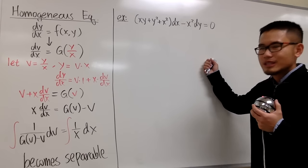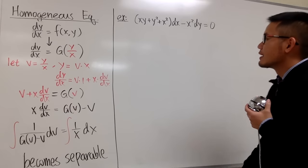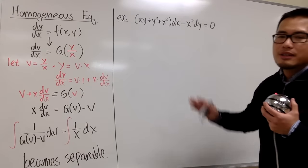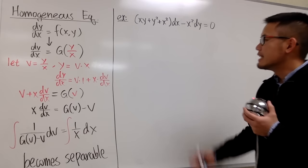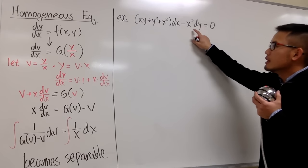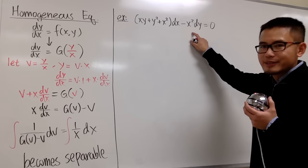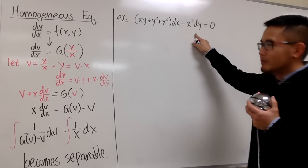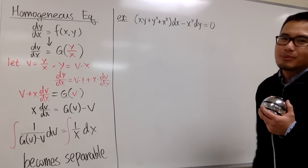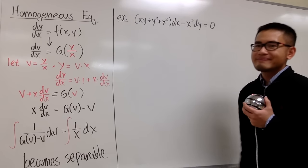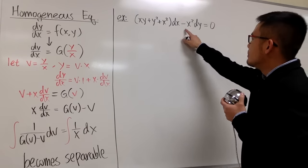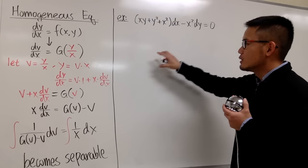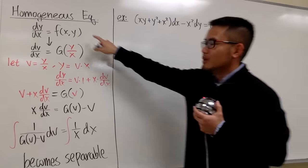Let me use a concrete example to demonstrate these steps. This equation is not separable, not exact, and not linear at the moment — but I will make it separable because I can do that. I'm going to rewrite this in the form dy/dx equals whatever.